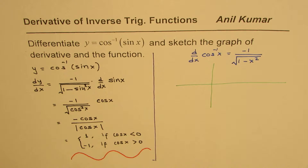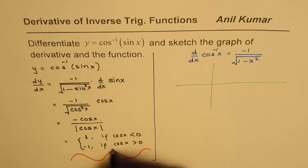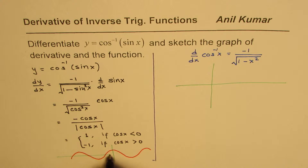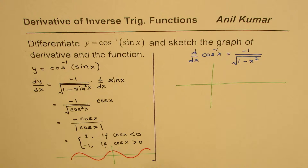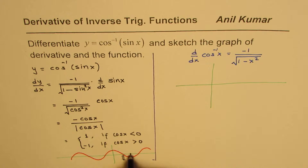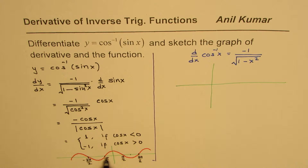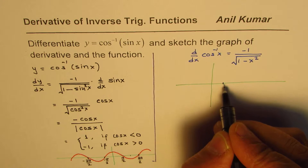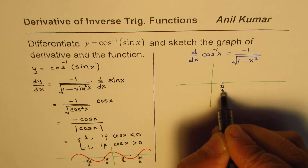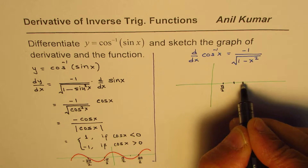Looking at the cosine function, we see that it has key values at pi/2, pi, 3pi/2, minus pi/2, and minus 3pi/2. Cosine is positive from minus pi/2 to plus pi/2, and negative from pi/2 to 3pi/2. So let me divide the scale in increments of pi/2: we have pi/2, pi, 3pi/2, and similarly on the negative side minus pi/2, minus pi, minus 3pi/2.